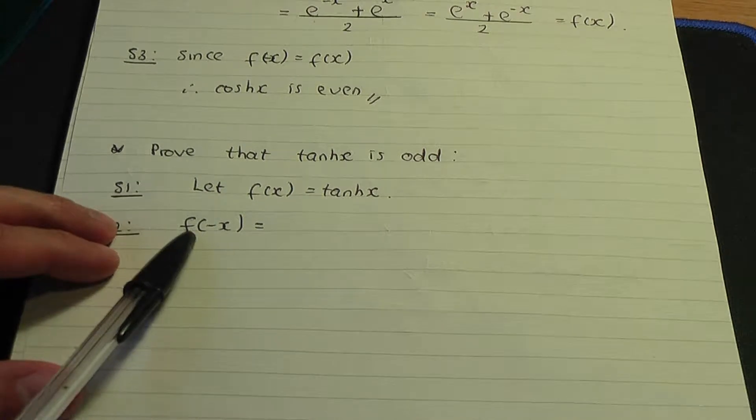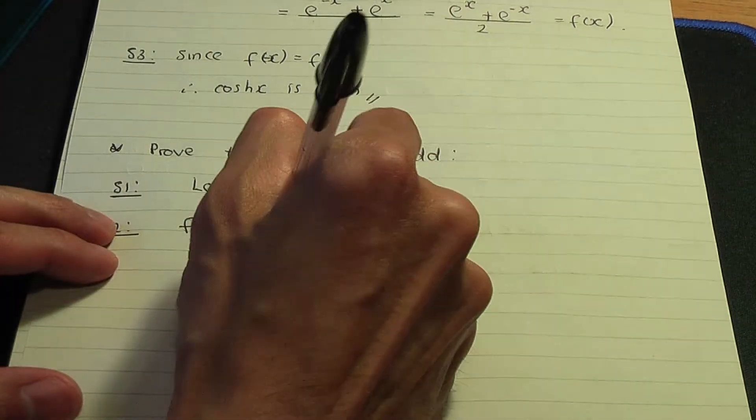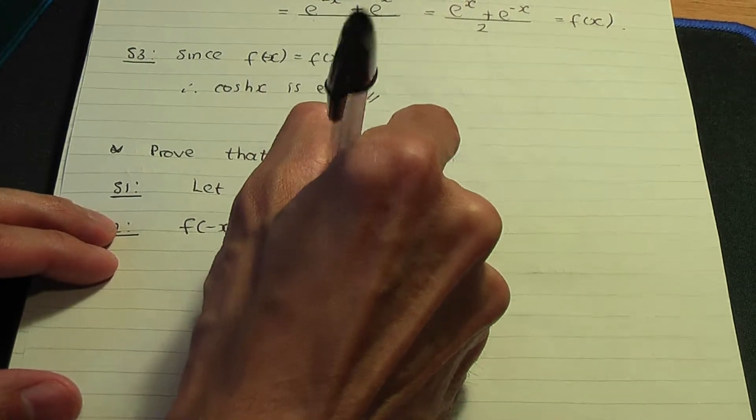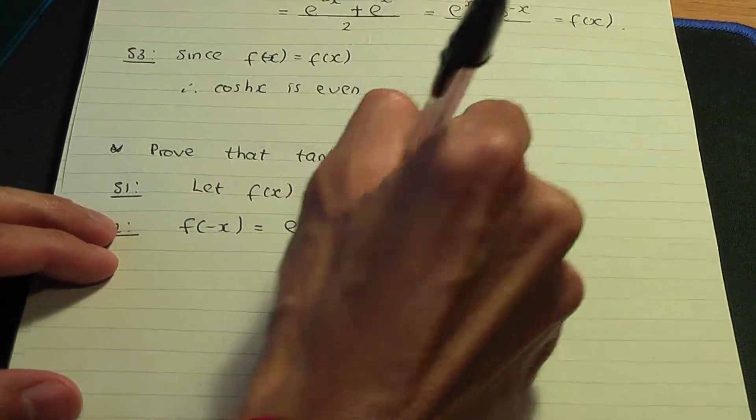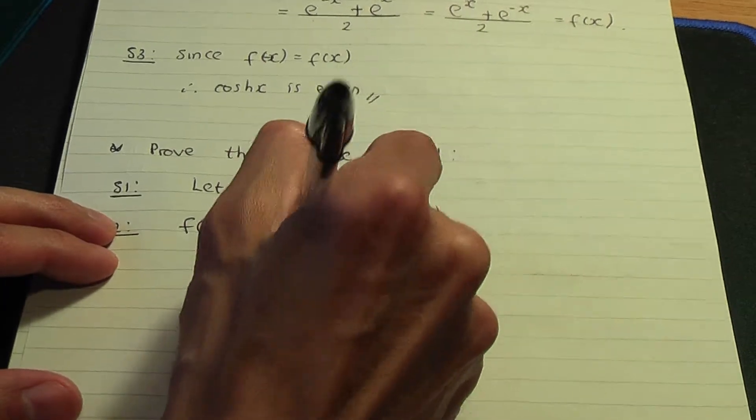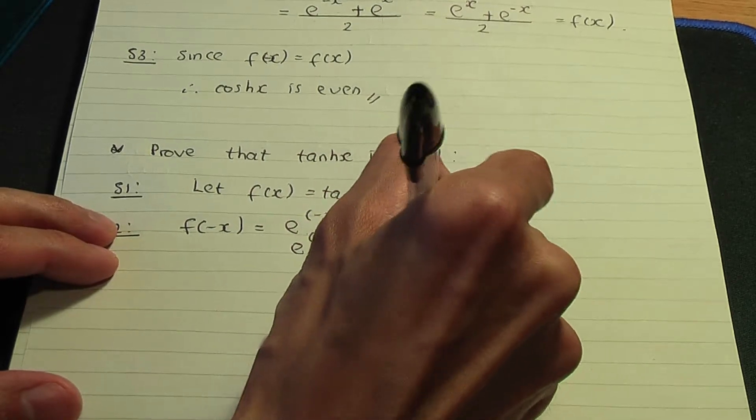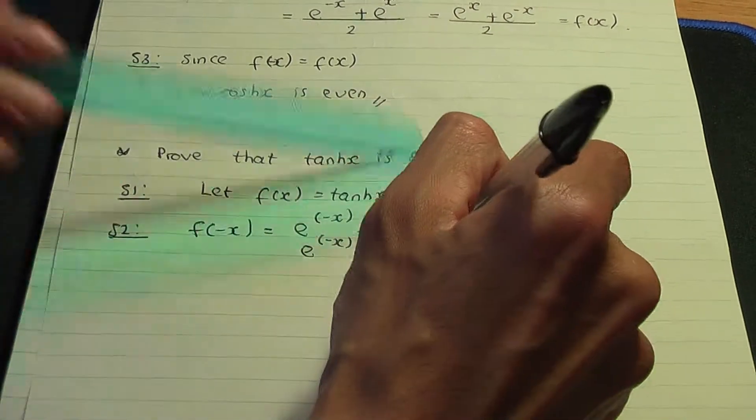If we replace the x's in our definition with negative x's, we're going to have e^(-x) minus e^(-(-x)) divided by e^(-x) plus e^(-(-x)).